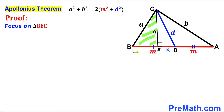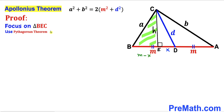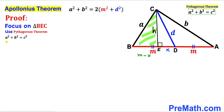Focusing on right triangle BEC: segment BE equals m minus x. Applying the Pythagorean theorem, (m − x)² + h² = a². This is equation number one.